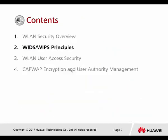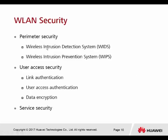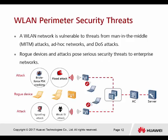WIDS and WIPS — Wireless Intrusion Detection Systems and Prevention Systems. To control user access security, there is link authentication, user access authentication, and data encryption, along with service security. The WLAN network is vulnerable to attacks such as man-in-the-middle attacks, ad hoc networks, and DOS. Rogue devices and attack probes pose serious security threats to enterprise networks. Attacks can now come from both external sources and the intranet.